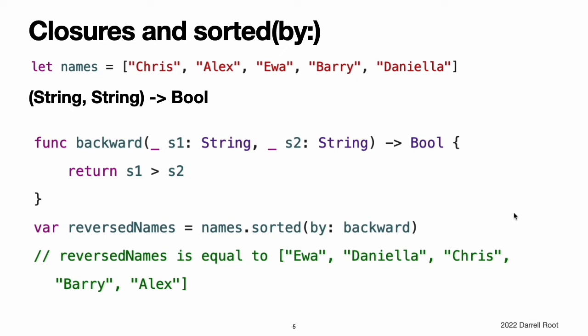The closure expression examples below use the sorted-by method to sort an array of string values in reverse alphabetical order. The sorted-by method accepts a closure that takes two arguments of the same type as the array's contents and returns a Bool value to say whether the first value should appear before or after the second value once the values are sorted. The sorting closure needs to return true if the first value should appear before the second value and false otherwise. This example is sorting an array of string values, so the sorting closure needs to be a function of the type (String, String) returning Bool. One way to provide the sorting closure is to write a normal function of the correct type and to pass it as an argument to the sorted-by method.